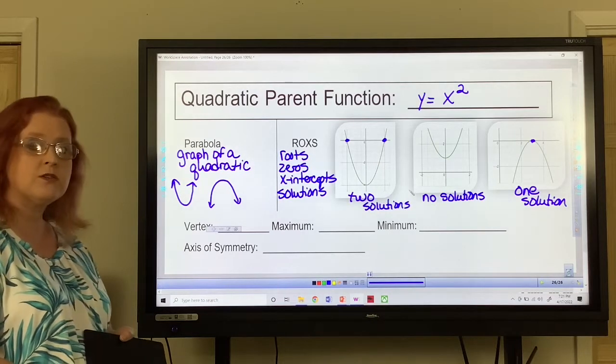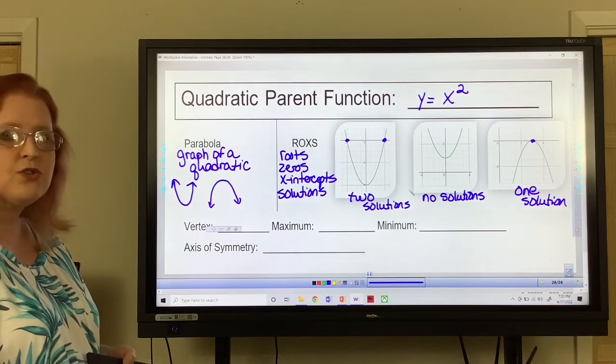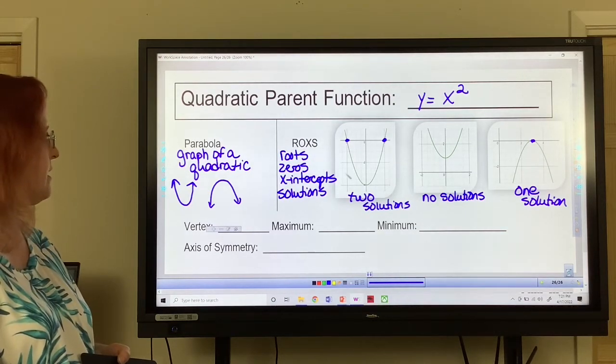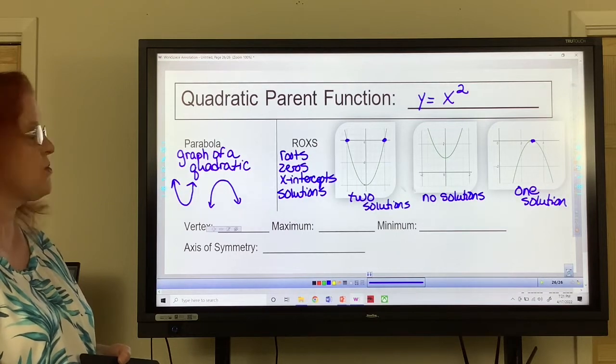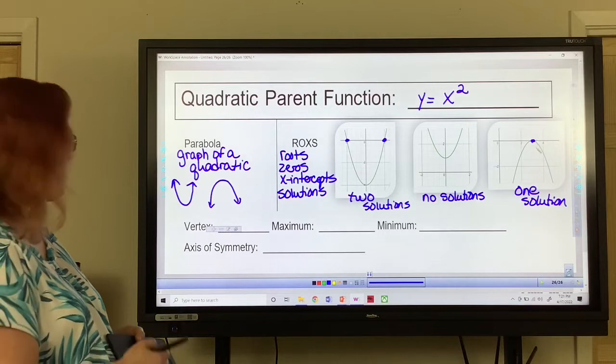Examples would be, which graph has two solutions or two roots? And you would pick this one. Which graph has no root? You would pick the middle one. Which graph only has one solution? And you would pick the last one.